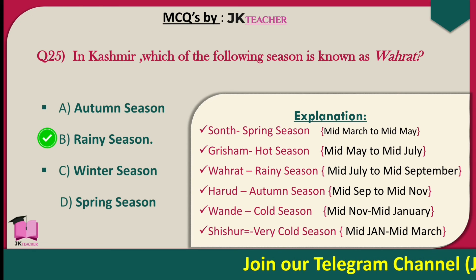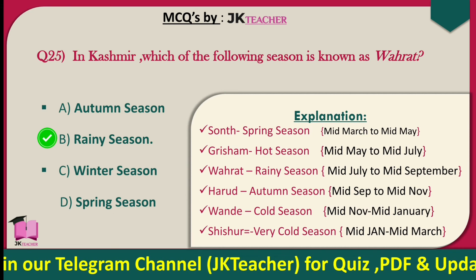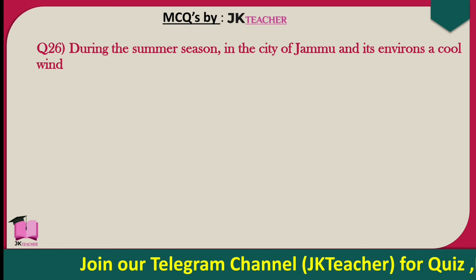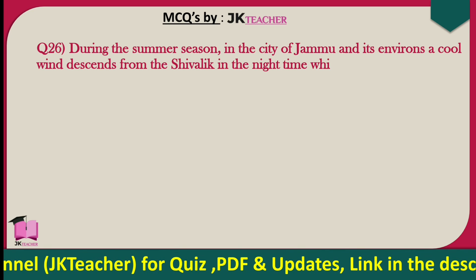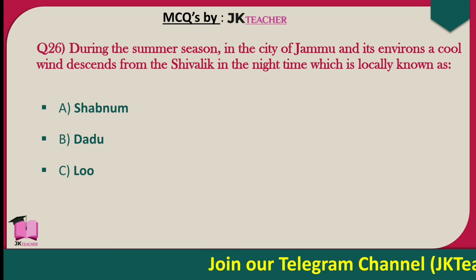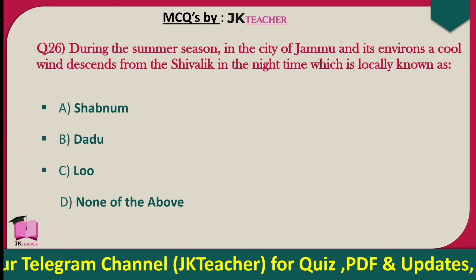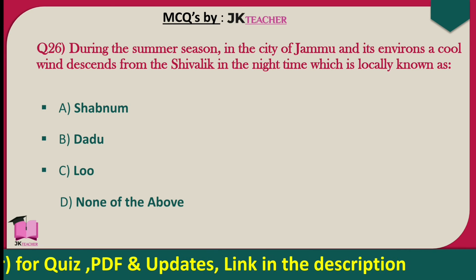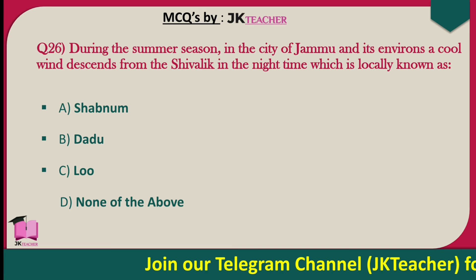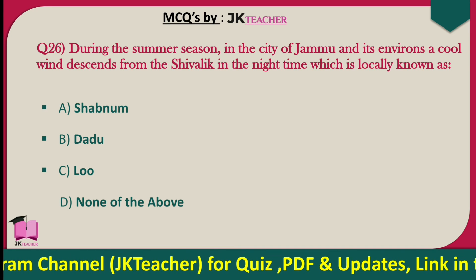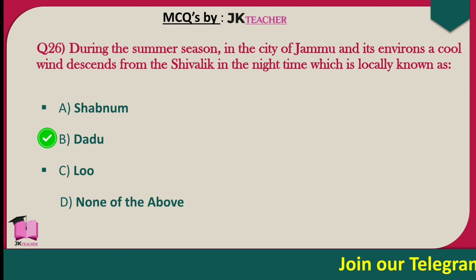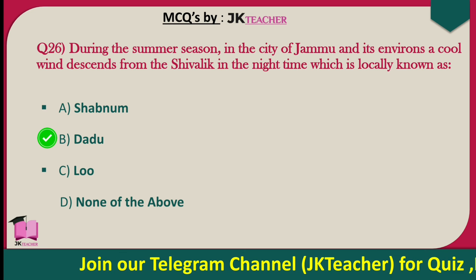During the summer season in the city of Jammu and its environs, a cool wind descends from the Shivalik range at night time, which is locally known as — options are Shabnam, Dadu, Loo, and none of these. The right answer is option B — Dadu. This cool wind descends from the Shivalik range at night.